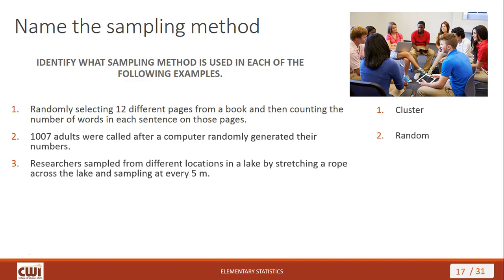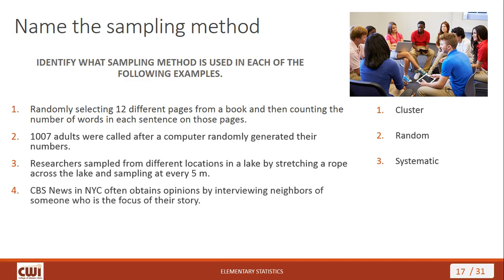Next: researchers sampled from different locations in a lake by stretching a rope across the lake and sampling every 5 meters. This is systematic sampling. You're not taking samples from every location, but every so often: take a sample, go another 5 meters, take another sample, go another 5 meters. You're doing it at a regular interval across the distance.